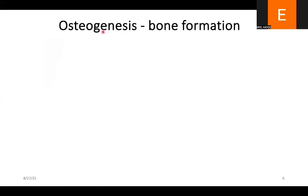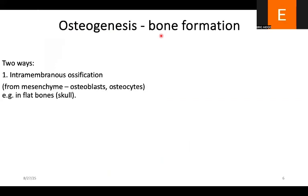Osteogenesis — genesis means source or beginning, and osteo has to do with bones, so osteogenesis means bone formation. There are two main ways. You have intramembranous ossification, which usually occurs in flat bones like that of the cranium — like the parietal bone. In this case, the mesenchyme differentiates to form osteoblasts and then osteocytes. Osteoblasts are the young bone-forming cells; osteocytes are the mature bone cells. That is how intramembranous ossification works — it forms from mesenchyme and directly forms bone cells.